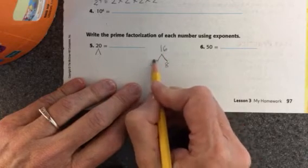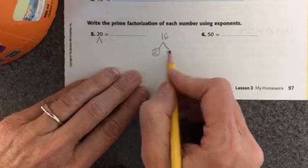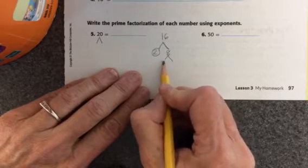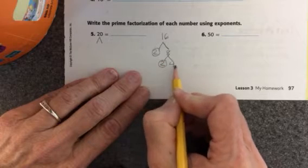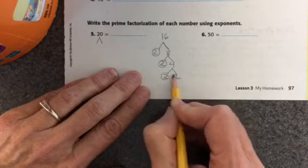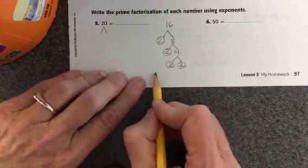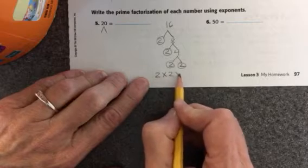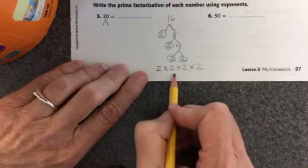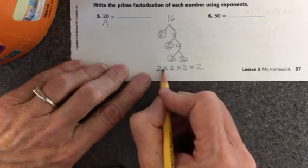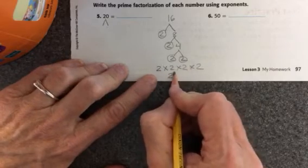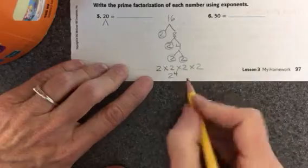I can multiply 2 times 8, and that will be 16. Two is prime, so I circle it. Eight is not prime, so I put two more branches. Eight would be 2 times 4. Two is prime. Four is not, so I keep going. Two times two. Two is prime. Two is prime. So I would write this prime factorization as 2 times 2 times 2 times 2, but now I'm going to write it using an exponent. So I can see that it's the number two that is repeated every time, and it is repeated four times. So my answer would be two to the fourth power.